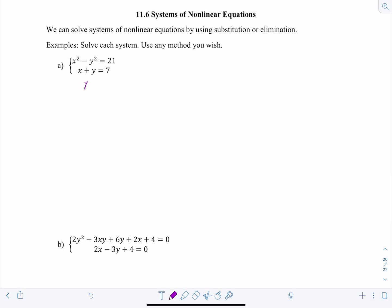Let's solve for x in the second equation. You could solve for y instead, it doesn't matter. And then I'm going to substitute this expression in for x into the first equation. So I'm going to have 7 minus y squared minus y squared equals 21.